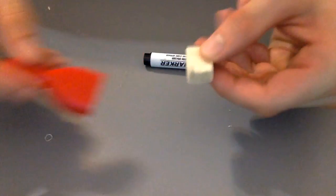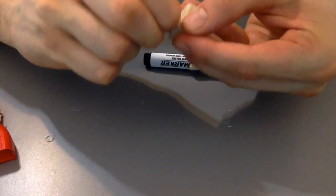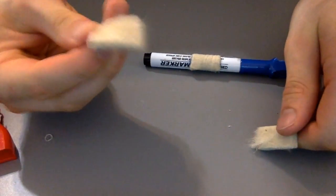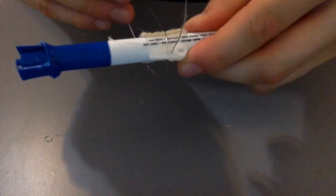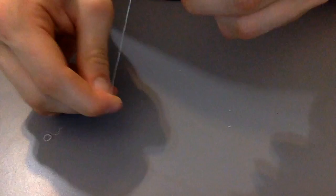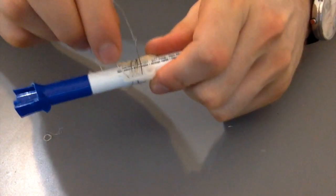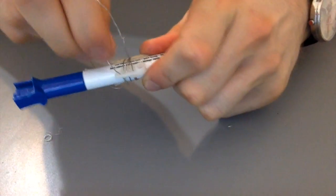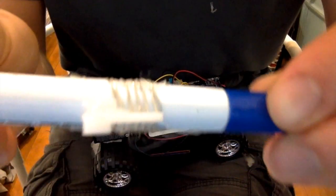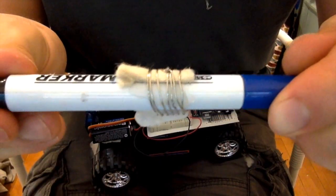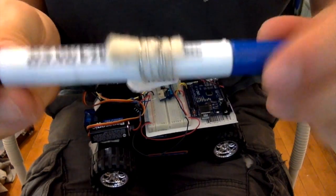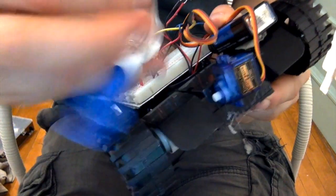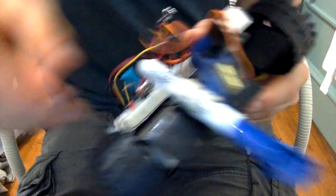We need to attach the marker to the servo. The way I decided to do that was by taking a piece of this whiteboard eraser, hot gluing it onto the marker to give it some more friction, and then wiring the whole thing through the holes of the servo arm. And there we go. Here we go. Pops into place.